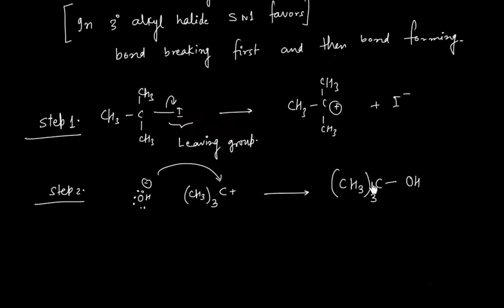In this lecture we discussed that there are two ways by which a nucleophilic substitution reaction can occur. The first way is bond breaking first and then bond forming. The second is bond breaking and bond forming occurring together. The first is called SN1 and the other is called SN2. If we have a primary alkyl halide or methyl halide, generally SN2 occurs; if we have a tertiary alkyl halide, generally SN1 occurs.